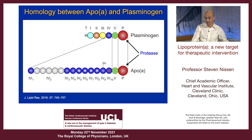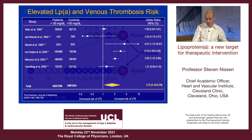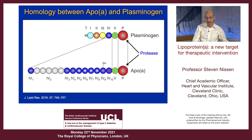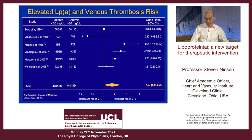Given this pro-thrombotic effect, you'd expect clotting in other locales — and that's exactly what you see. Here is LPA and venous thrombosis risk — a meta-analysis that is well done. If you have an elevation of only 30 milligrams per deciliter, you have a 77% increased risk of venous thromboembolism. So that plasminogen-like component is driving thrombosis as well as atherosclerosis.